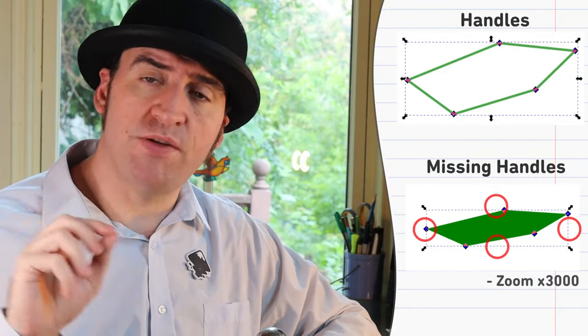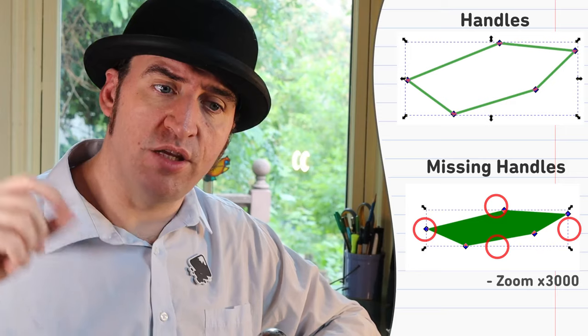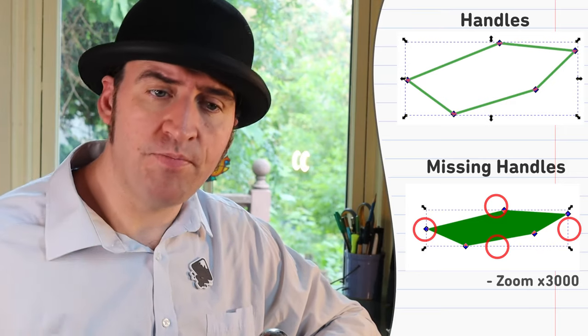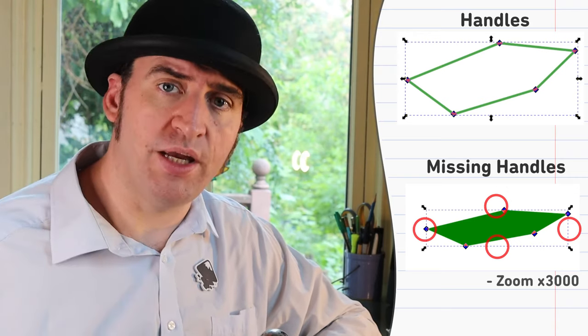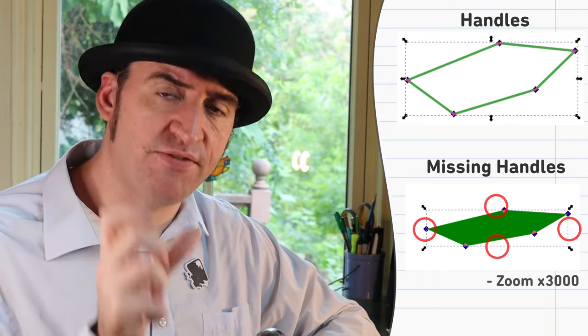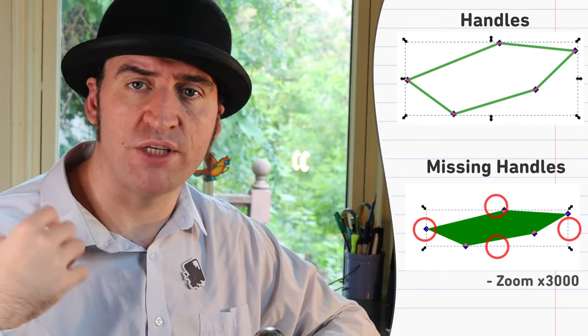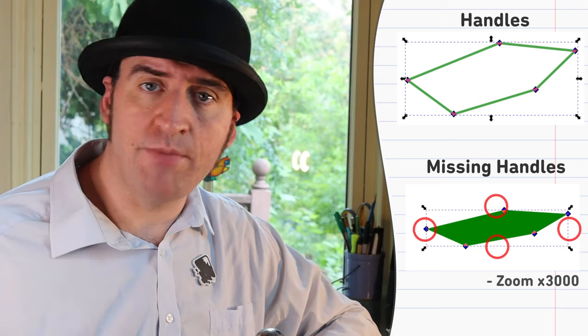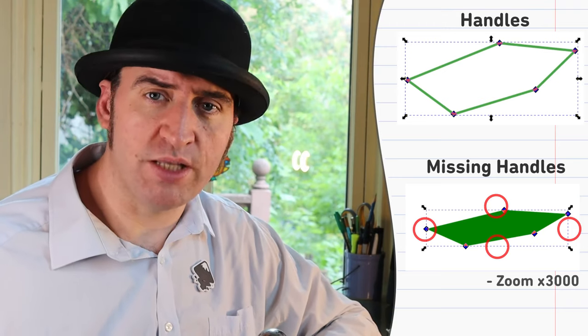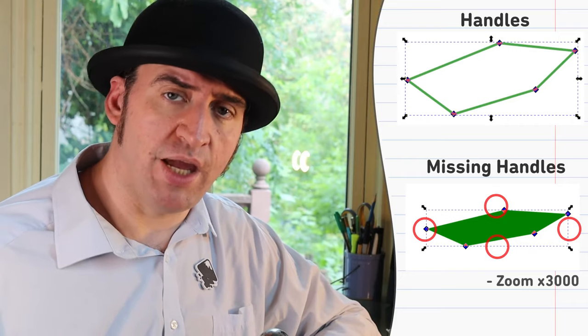A small fix I did to the node selector: if you were using transform handles in nodes, sometimes when selecting a really small object the node handles would disappear even when zoomed in. The reason was that it wasn't taking the zoom level into account when calculating how visually far apart the nodes were before deciding to hide them. Big thanks to Cheesness, a game developer I was watching on Twitch doing some Inkscape work — this issue came up and I was able to fix it right then and there.